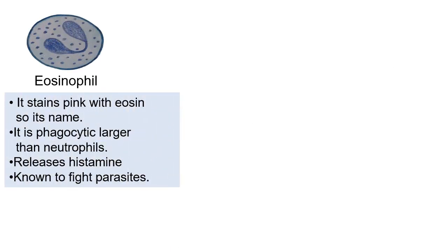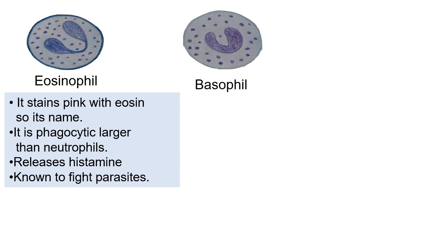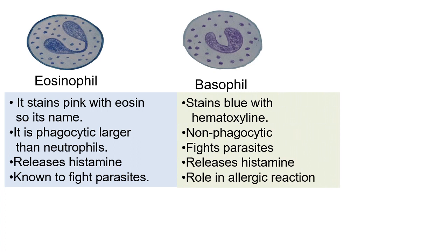Eosinophil is a large phagocytic cell that releases histamine and is known to fight parasites. Basophil is a non-phagocytic cell which also releases histamine, is known to fight parasites, and plays an important role during allergic reactions.